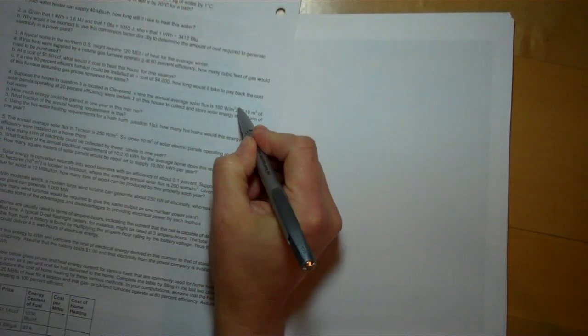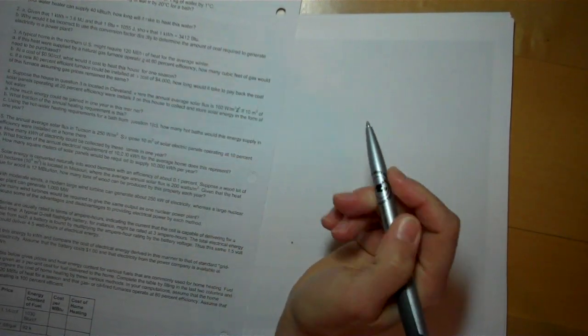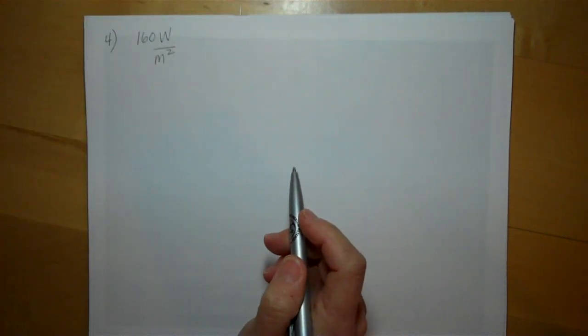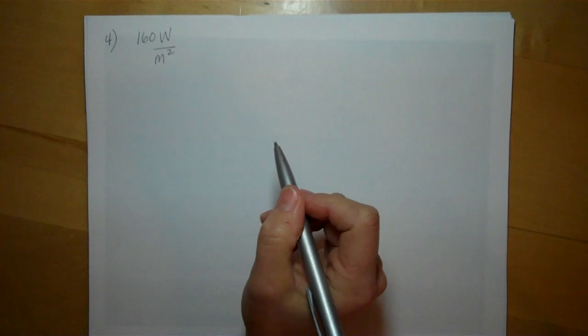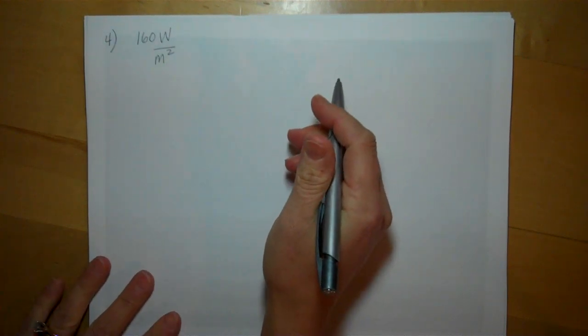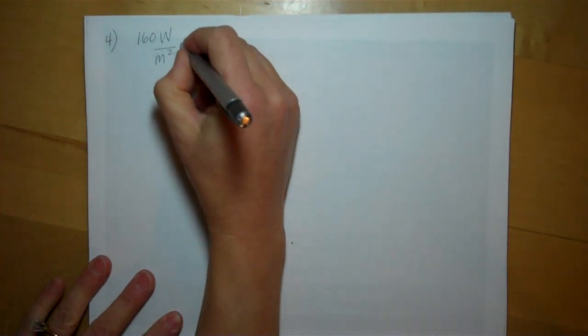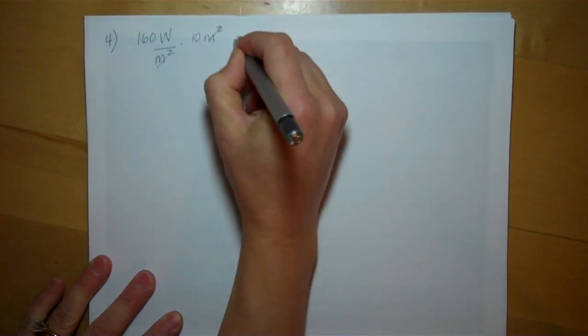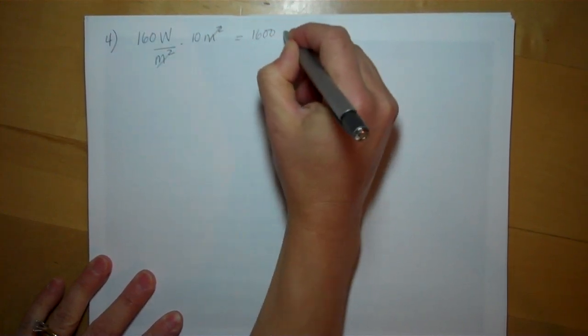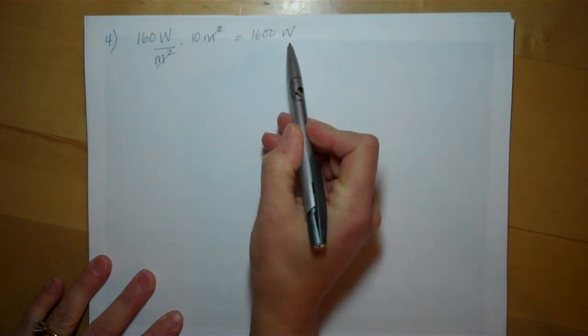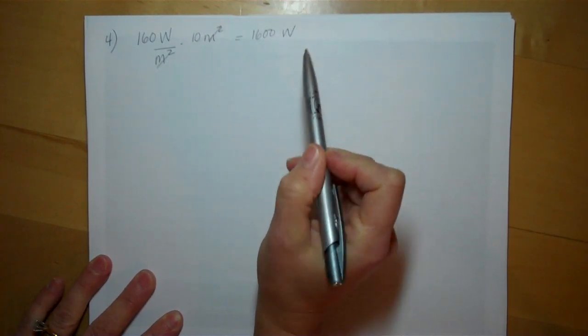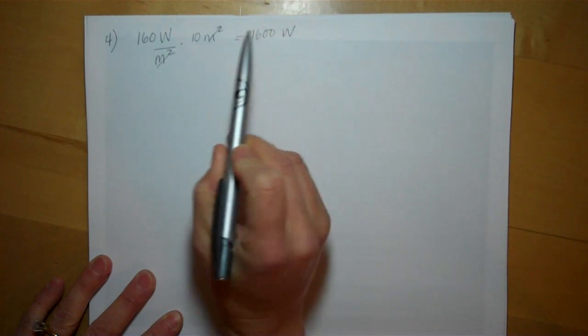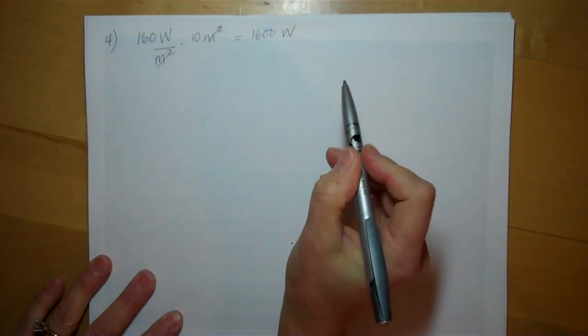They're saying, what if we installed 10 square meters of solar panels up on our roof? So if we had 10 square meters of solar panels, our solar system could produce 1600 watts of power. The 20% efficiency we'll get to in a minute, because solar power, like everything else, is not 100% efficient.